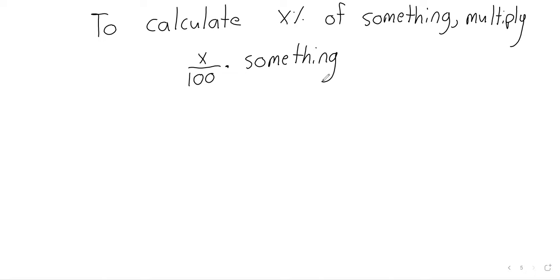This is because percents are fractions, and this is exactly how things work with fractions. If you want to know what a third of a number is, you multiply the number by a third. If you want to know what 20% of something is, you multiply the thing by 20%. But when you do this multiplication, it's necessary to turn the percent into a fraction. The temptation when first learning this is to multiply by 20, but that is not correct — it has to be turned into a fraction.